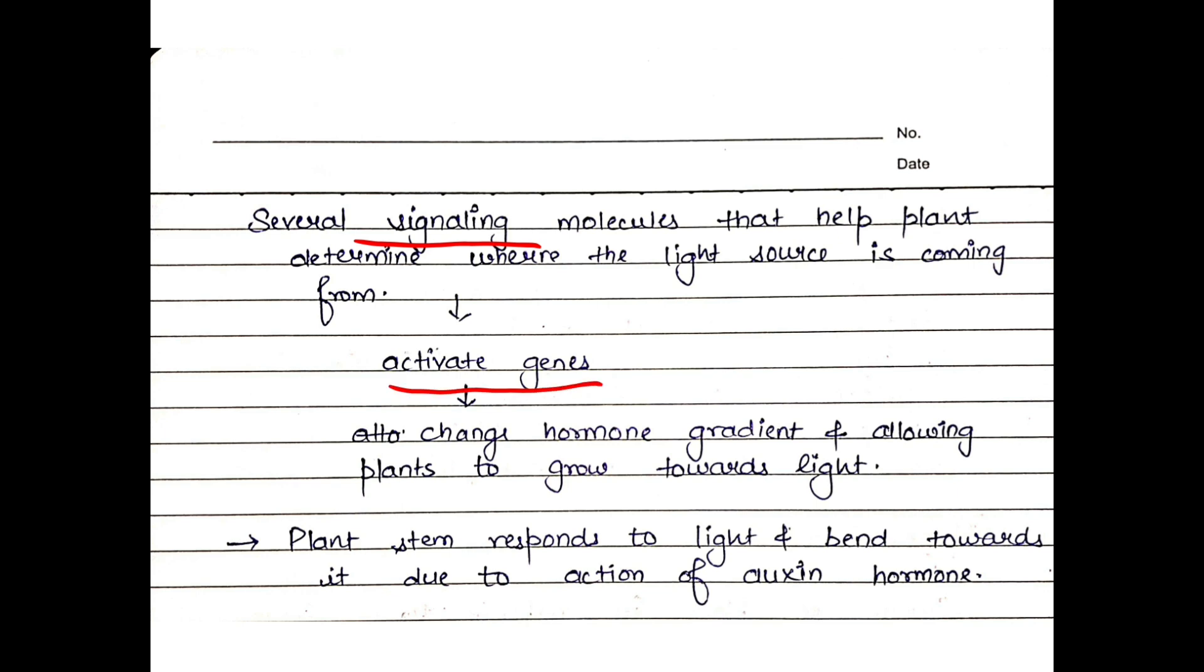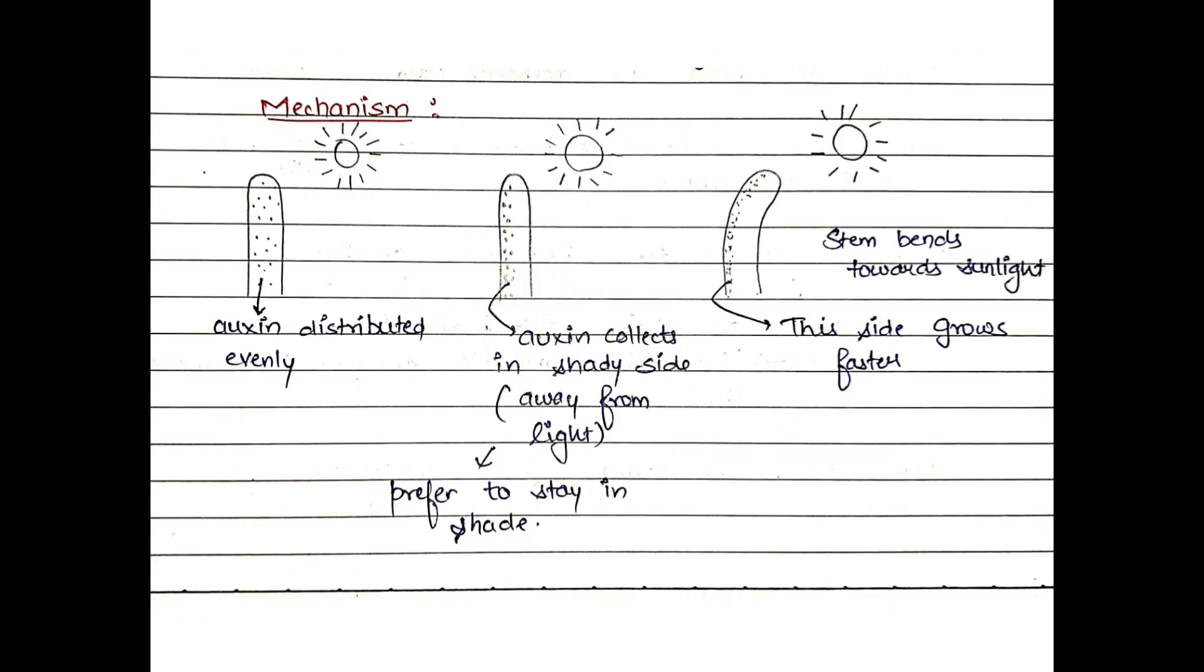In the roots, the phototropism is negative phototropism. The roots will always try to go away from sunlight. Several signaling molecules are released to detect where the light source is coming from. Then genes are activated, and the hormone gradient changes. Auxin prefers to stay in the dark, so auxin will be collected on one side. This causes unequal growth in the plant, and the plant will bend. Oxine causes the bending of the plant through differential growth. This is positive phototropism.